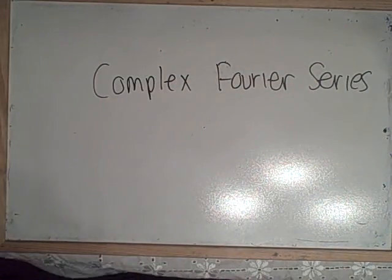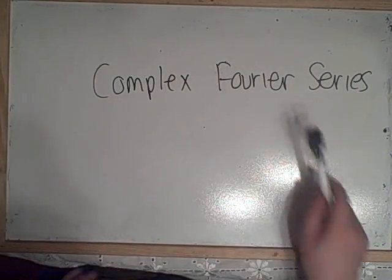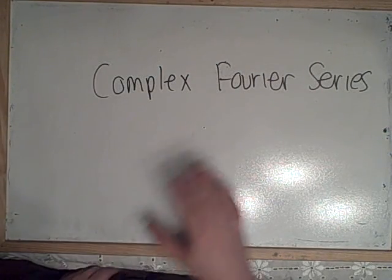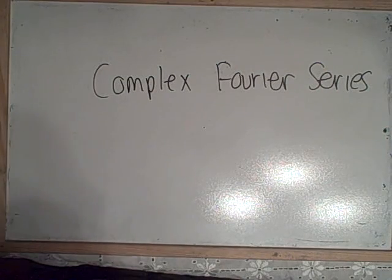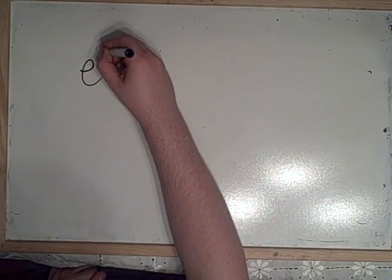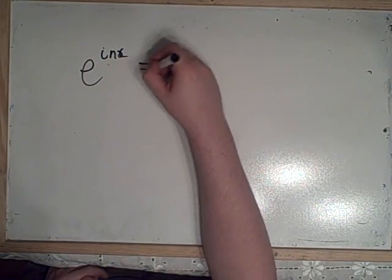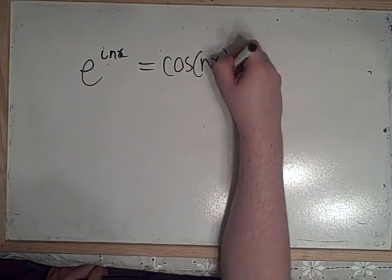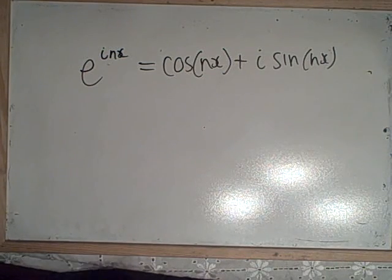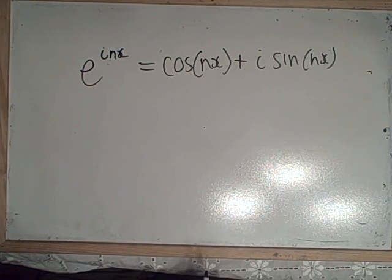This is another lecture on Fourier series, and this is on complex Fourier series. This will just be the theory behind it, and I will link to an example when I do one, because on the whiteboard I can't really be as prepared as I am with the presentations on the projector. Now for a complex Fourier series, this involves Euler's formula, that E to the I N X equals cosine N X plus I sine N X. This is just complex numbers, that's why it's a complex Fourier series.